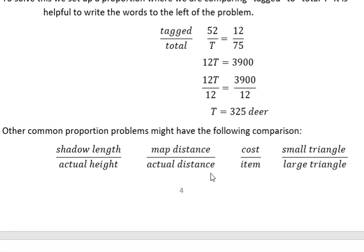Actual map distance to actual distance, like the distance between two cities on a map is one and a half inches and you have to figure out what the actual distance is. Sometimes they'll say it costs $19 for three gallons of milk. How much would it cost for 25 gallons? So the cost per item is a really common one.